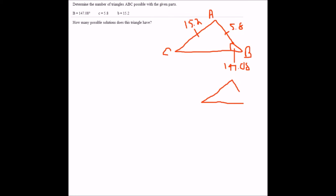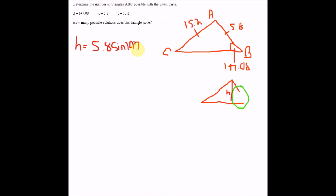The triangle would likely look like this with an incomplete segment. We want to find H. H equals the adjacent side multiplied by sine of the given angle. The adjacent side in this case is 5.8, so H = 5.8 × sine(147.08°). Entering this into the calculator gives us H = 3.15.